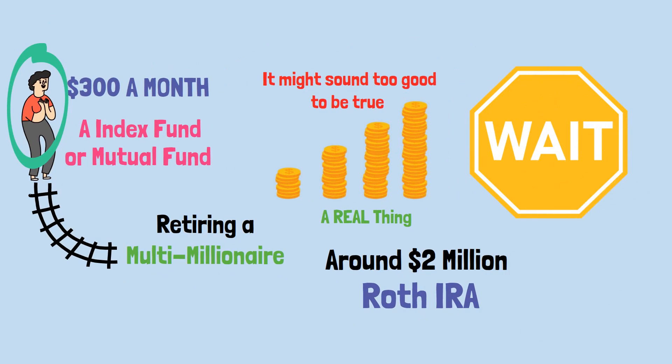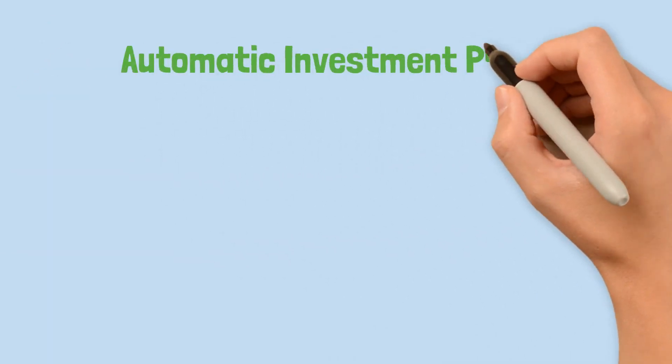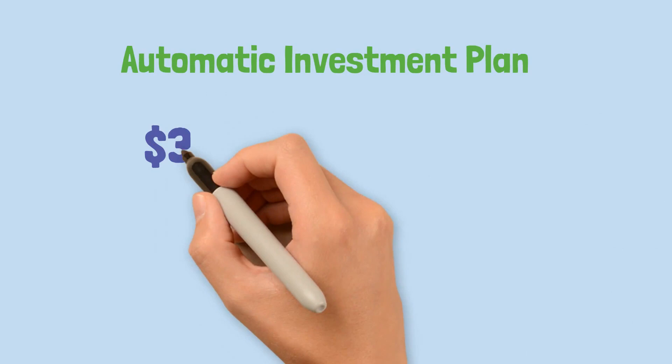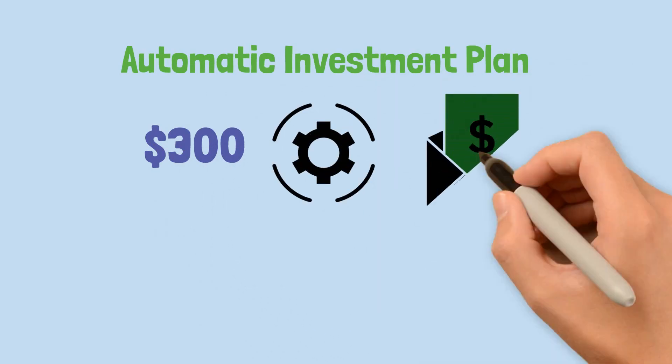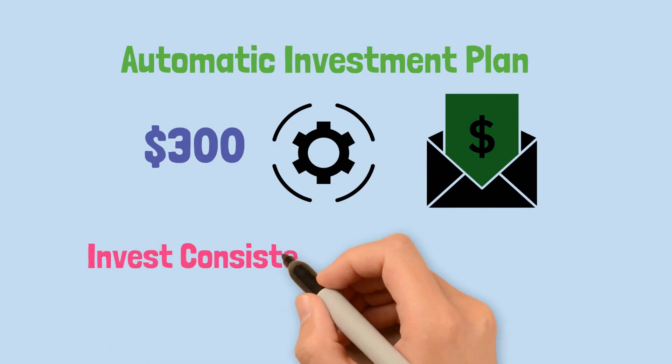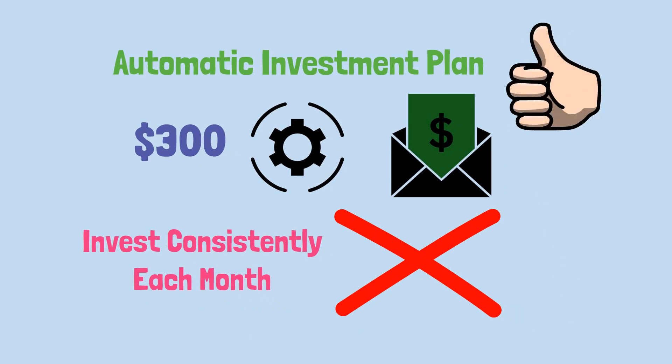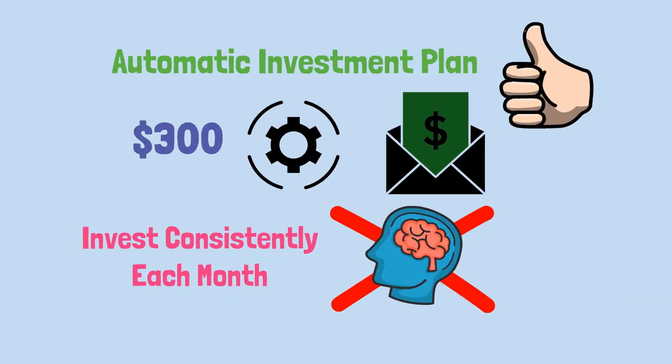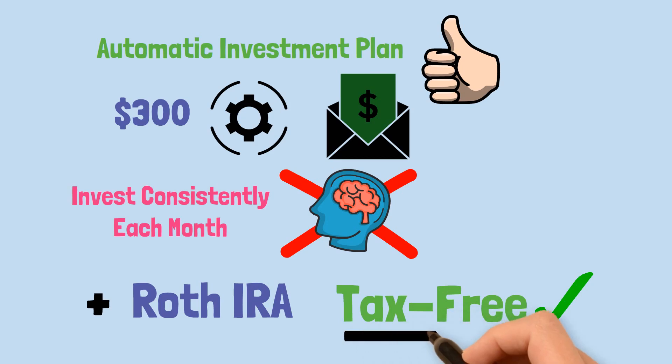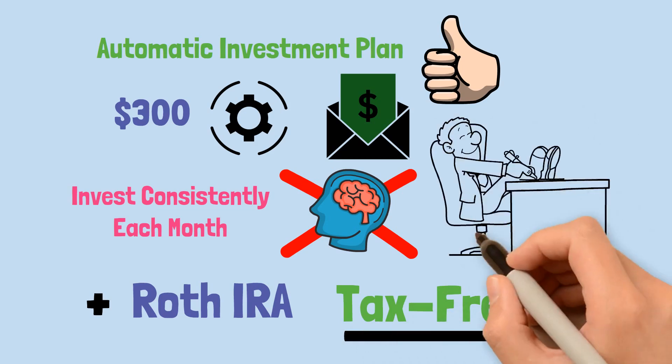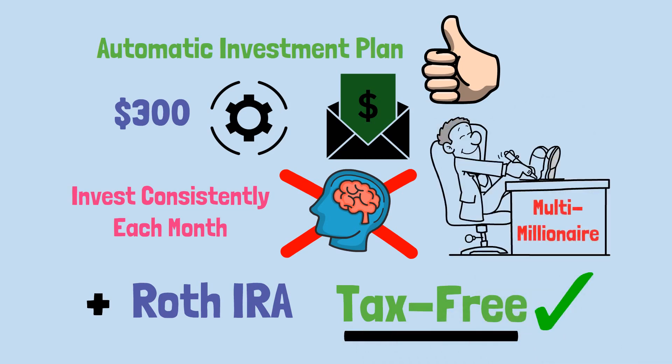But wait, it gets even better. Liam could set up an automatic investment plan, which means $300 is automatically invested as soon as his paycheck comes in. It means Liam can invest consistently every month without lifting a finger, once he initially sets it up. It's so easy he won't even have to think about it. Plus, since he's invested within a Roth IRA, his returns can be withdrawn tax-free. That's right, tax-free. This truly is the laziest way for someone to become a multi-millionaire.